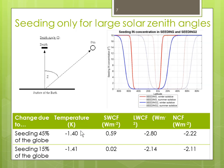Interestingly, the two different seeding strategies — seeding 45% of the globe versus seeding only 15% — achieve exactly the same cooling. We thought that was a very interesting finding, and obviously you would go for the 15% strategy if you were ever to implement this.